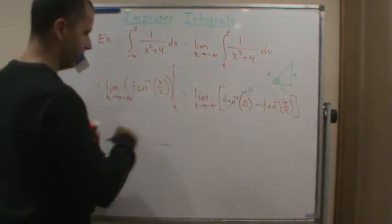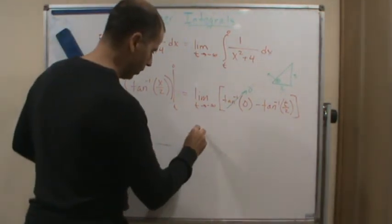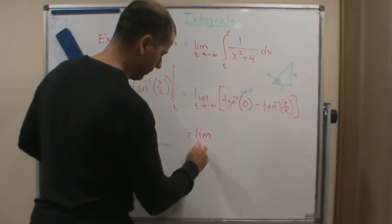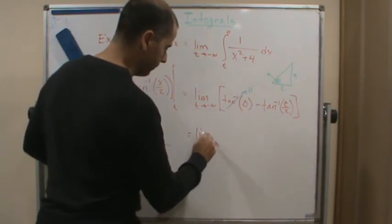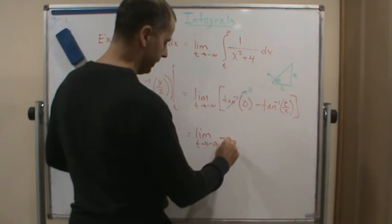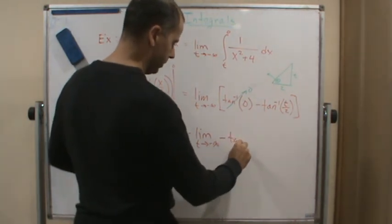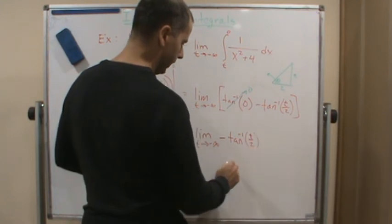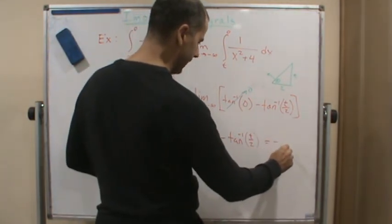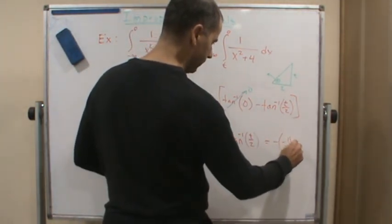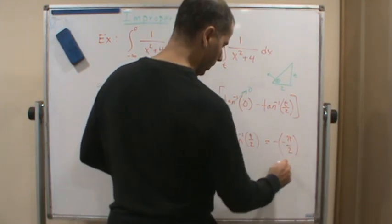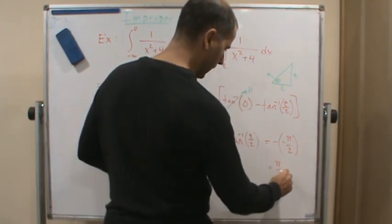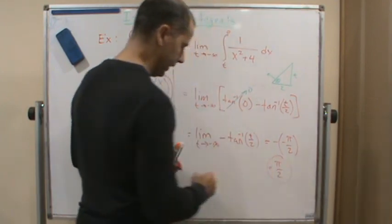So let me write that. This is the limit as t approaches negative infinity of the negative tangent inverse of t over 2. And so this will equal the negative of negative pi over 2, which equals pi over 2. And that's your answer.